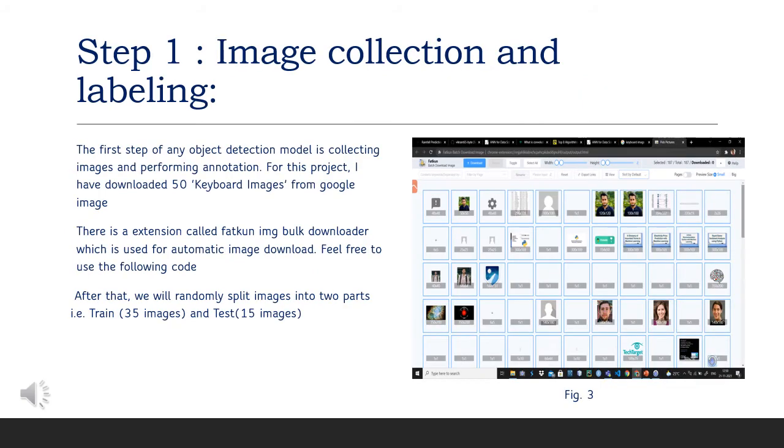Step one, image collection and labeling. We have used Fatkin image bulk downloader to automatically download many images of black, white, and colored keyboard images.